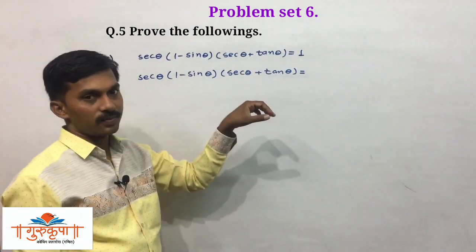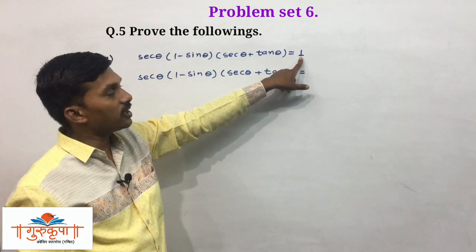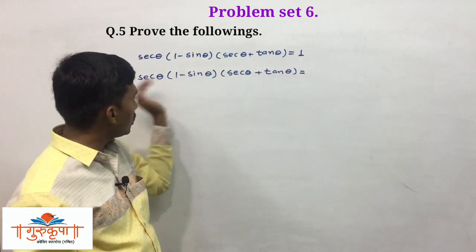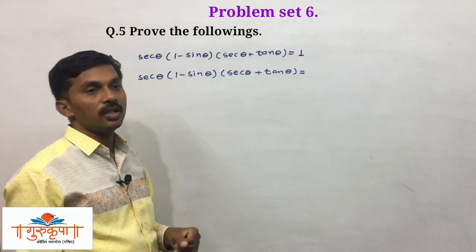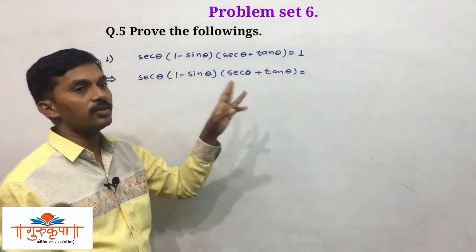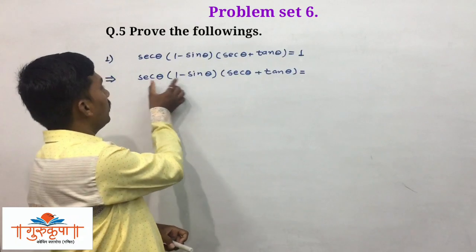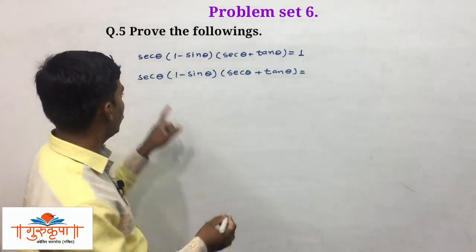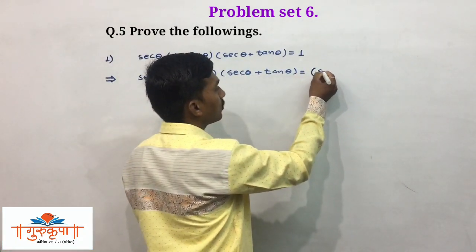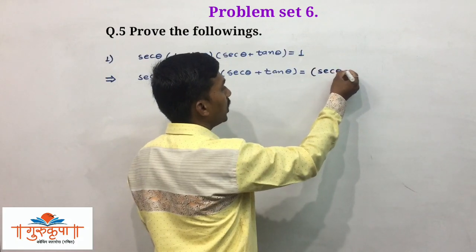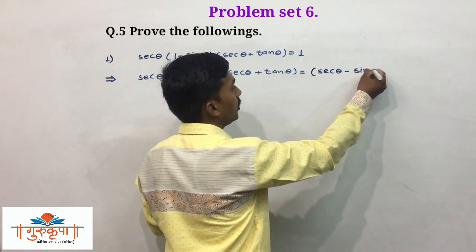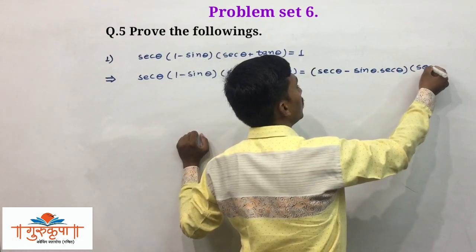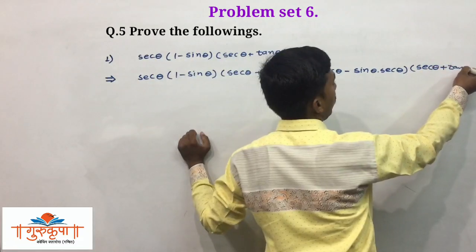How to simplify this: we observe the RHS first and make changes to the LHS only, using two approaches — simplification and using identities. First, we multiply (1 minus sin theta) by sec theta. So this becomes: sec theta into sec theta — which is sec theta — minus sin theta multiplied by sec theta, into the second bracket (sec theta plus tan theta) as it is.